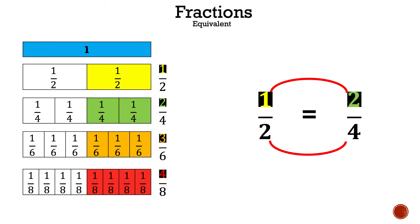Now let's take a look and see how we can find how they're equivalent mathematically. We have one-half and we need to relate it to two-fourths. How can we get one to two? How can we get two to four? Well, in this case we can just multiply each number by two. So one times two gives me two, and two times two gives me four. So now we know that one-half is equal to two-fourths because we can see it on the screen — they're both on the right-hand side and they represent the same amount of space.